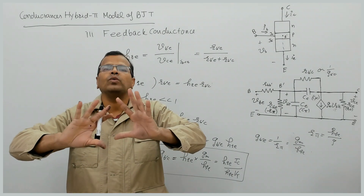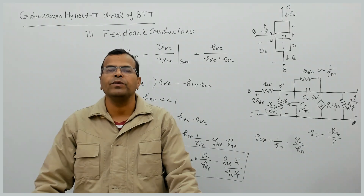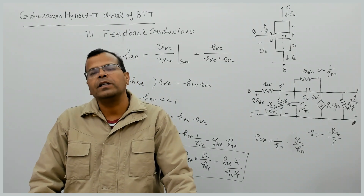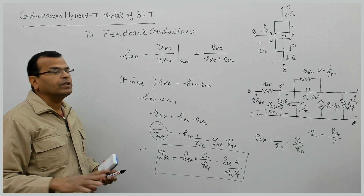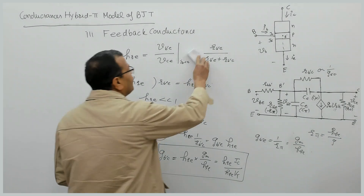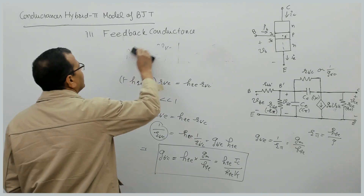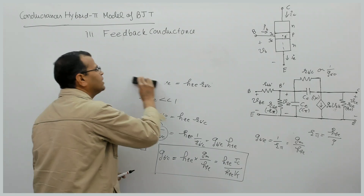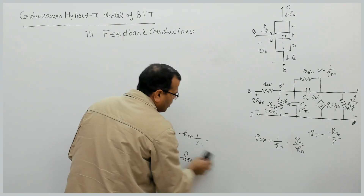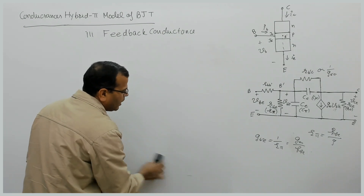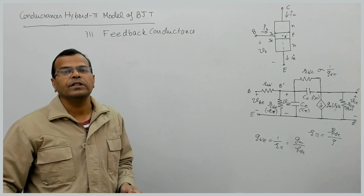This derivation shows that the parameters of the hybrid pi model can be obtained in terms of h parameters. If you know the small signal parameters of a BJT, you can easily determine the parameters of the hybrid pi model and vice versa — both are convertible. This is one objective type question in engineering services exam. For GATE, the in-depth parameter analysis can be skipped, but the high frequency response analysis is important for both GATE and engineering services.